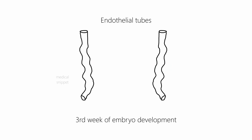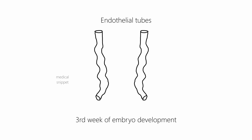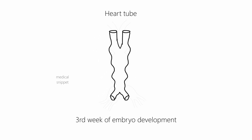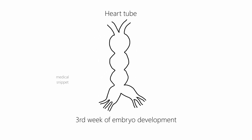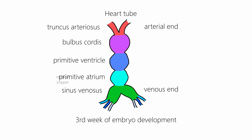By the third week of embryo development, the two endothelial tubes fuse to form a single heart tube. It has an arterial end and a venous end. The arterial end is called truncus arteriosus and the venous end is called sinus venosus. Between them are bulbus cordis, primitive ventricle, and primitive atrium.